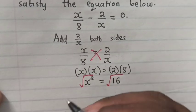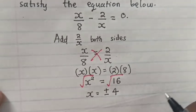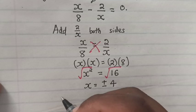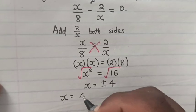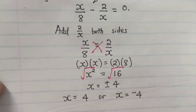So square root of x squared is x. Square root of 16 is plus or minus 4. So x is equal to 4 or x is equal to minus 4.